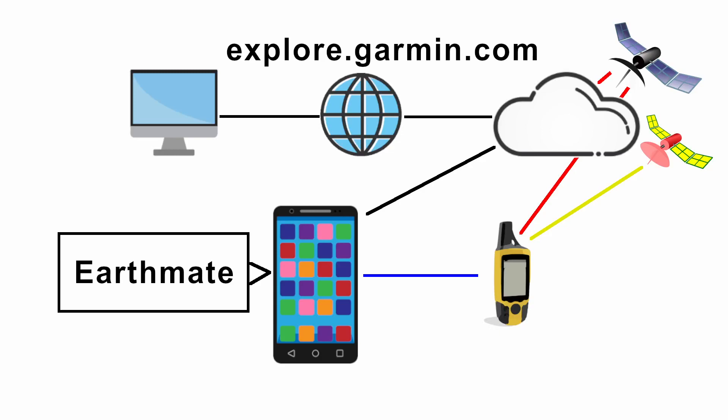This is the setup for the inReach satellite communicator. The inReach gets location information from the GPS satellites, shown here in yellow. It also communicates with the Garmin cloud via the Iridium communication satellite, shown here in black, to send and receive text and emergency messages. It connects to your smartphone via a Bluetooth connection. The EarthMate app ties it all together. The website where you can manage the data and the subscription is explore.garmin.com. This is a case where the app and the website do not have the same name, so it should be less confusing.